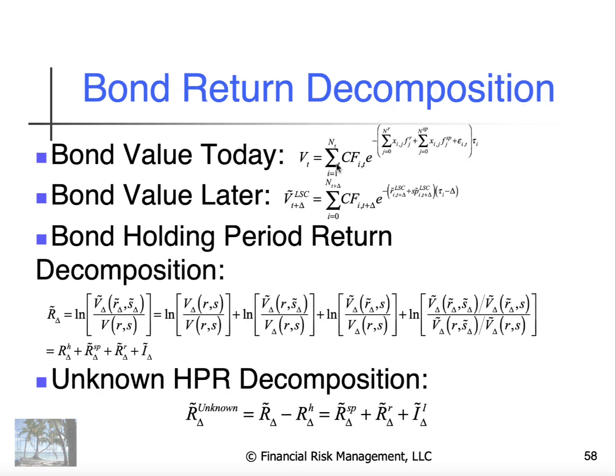The bond value today, the way we're going to do this is we're going to fit a base curve, then we're going to fit a spread curve. We know this has some sort of error in it. The bond value later is we're going to model some changes in the LSC model, some changes in the spread of the LSC model applied to spreads. And then we're going to proxy the bond value later based on these parameters.